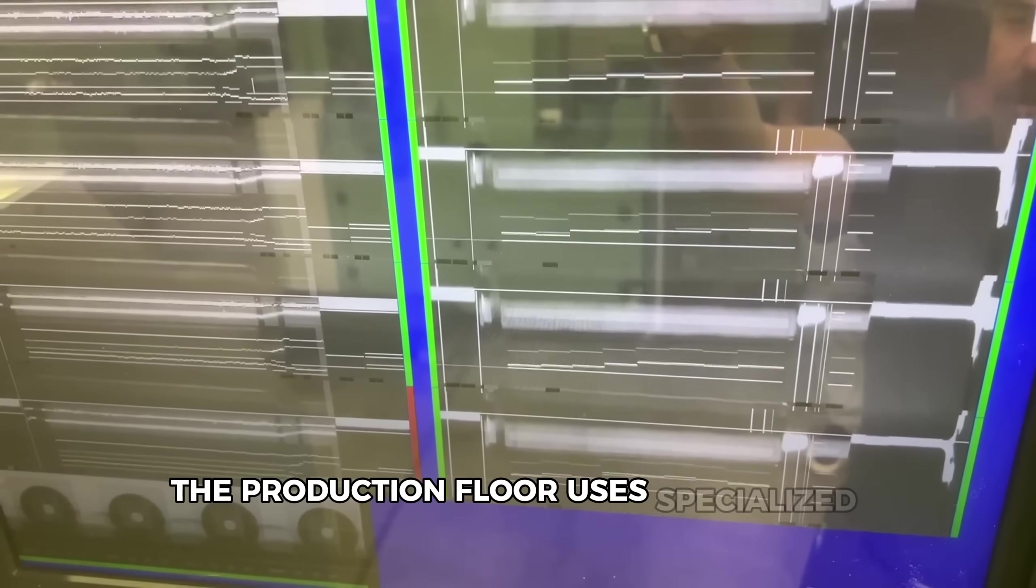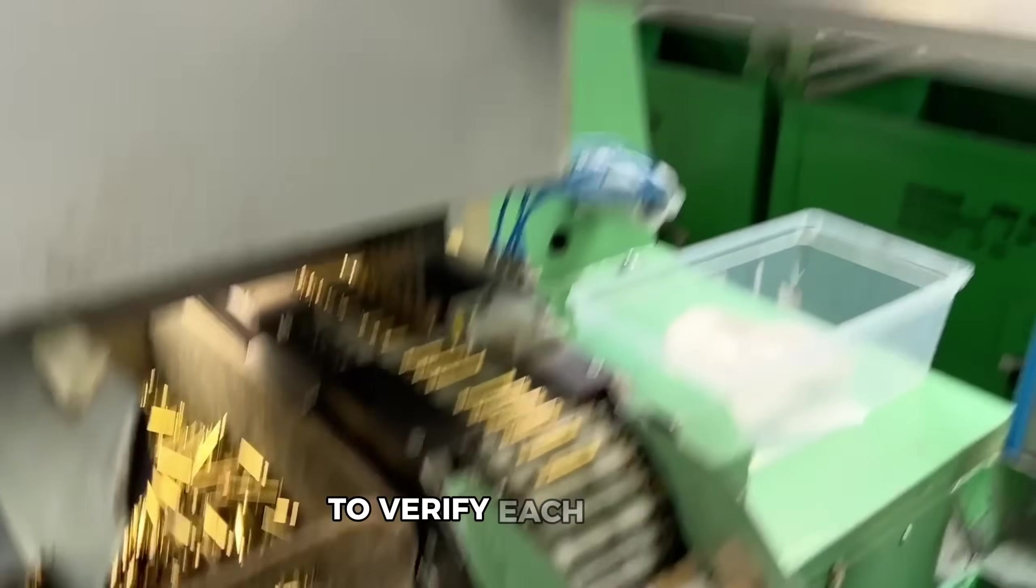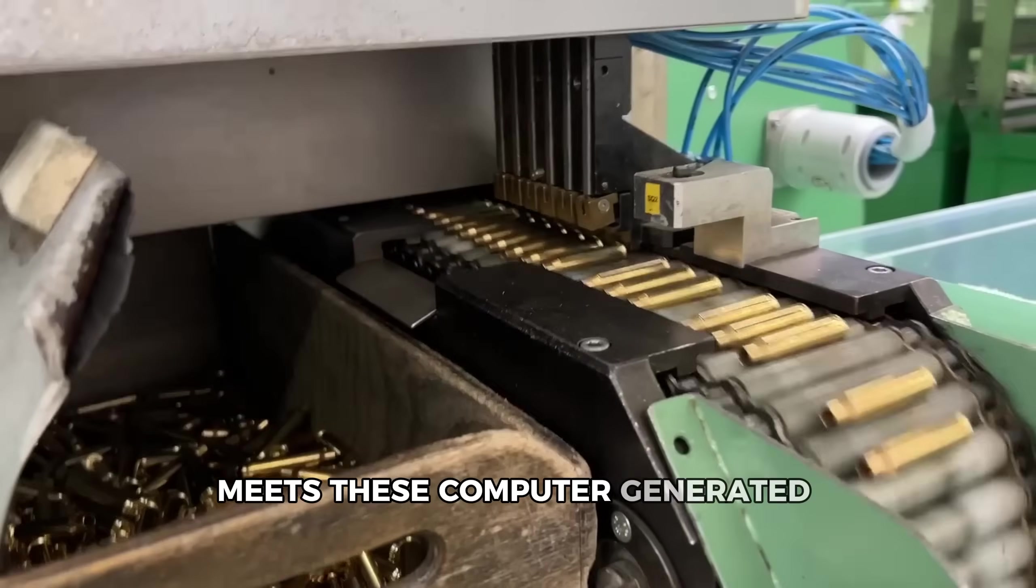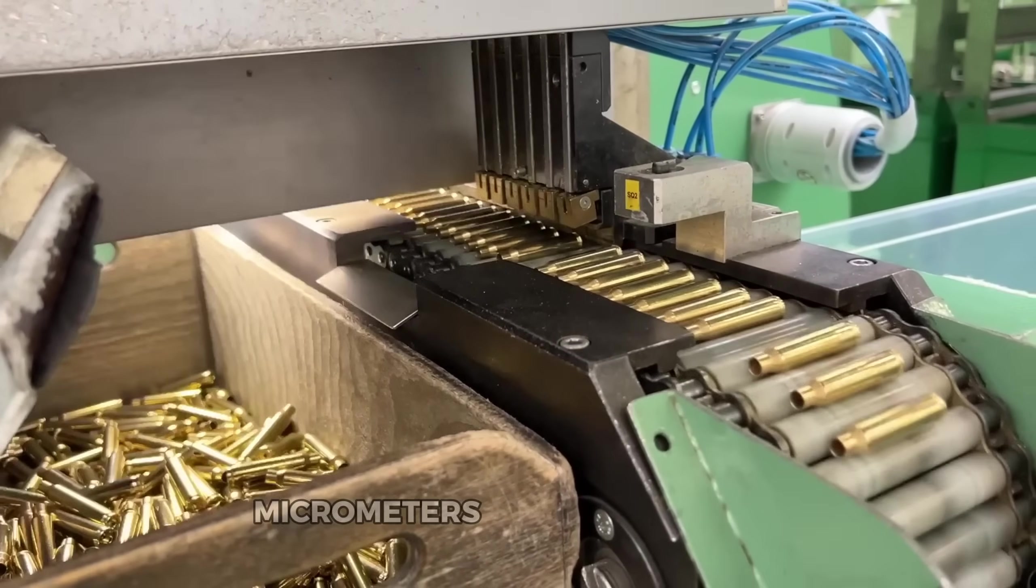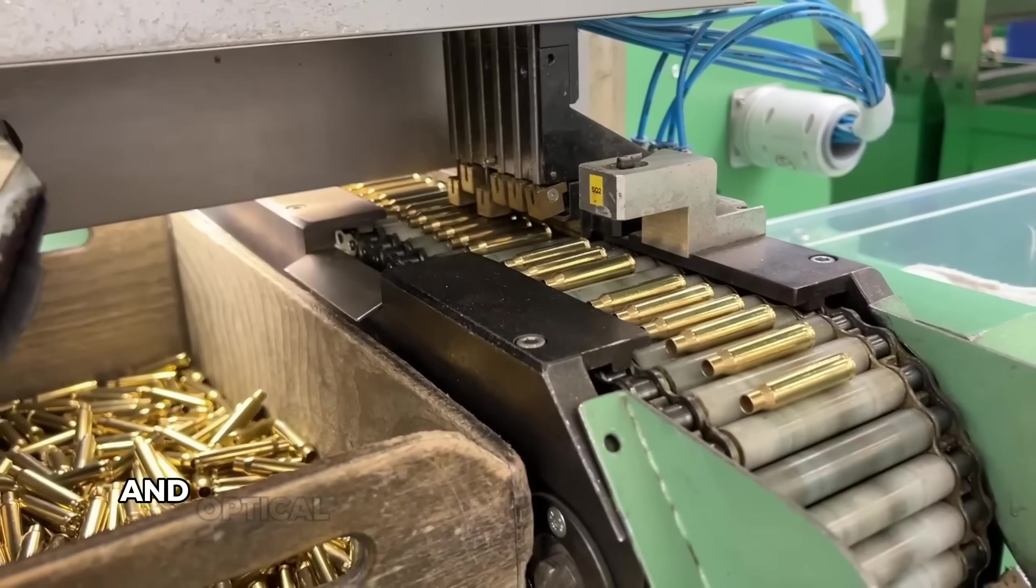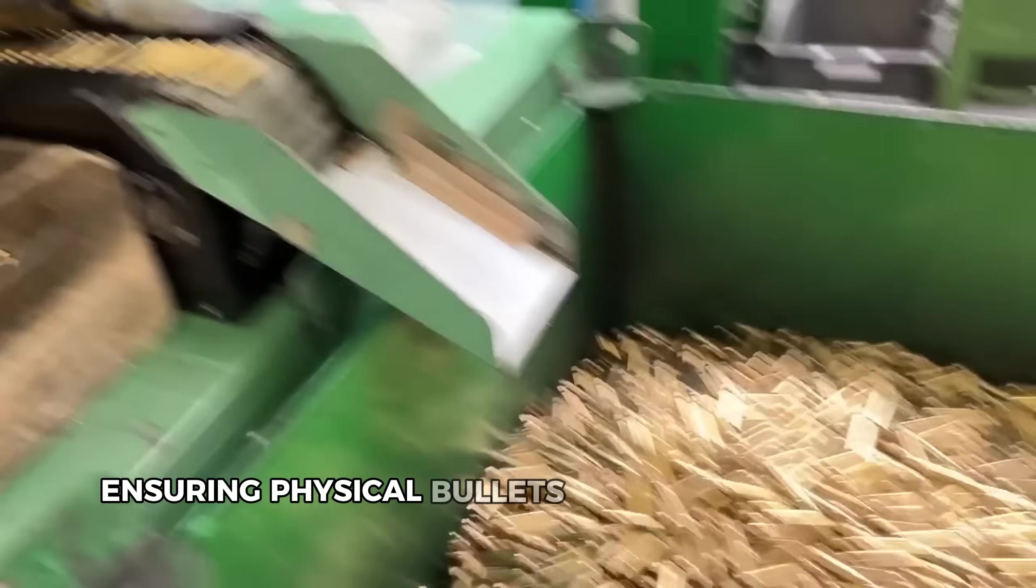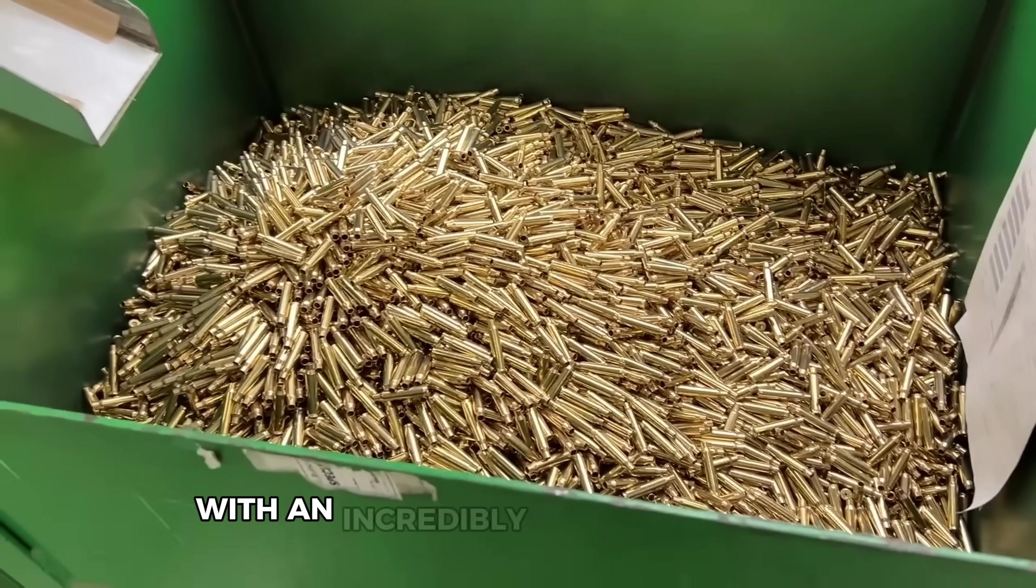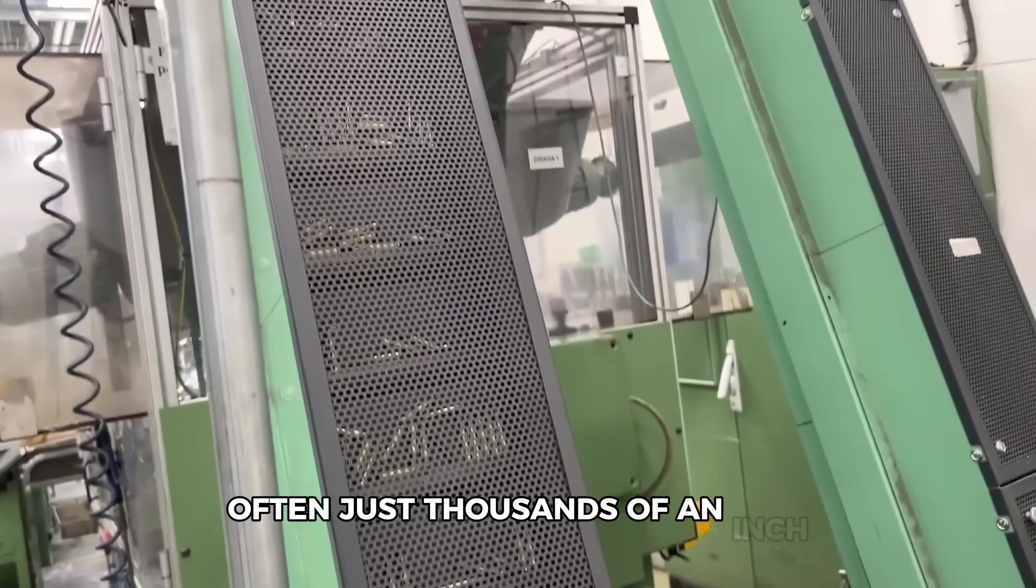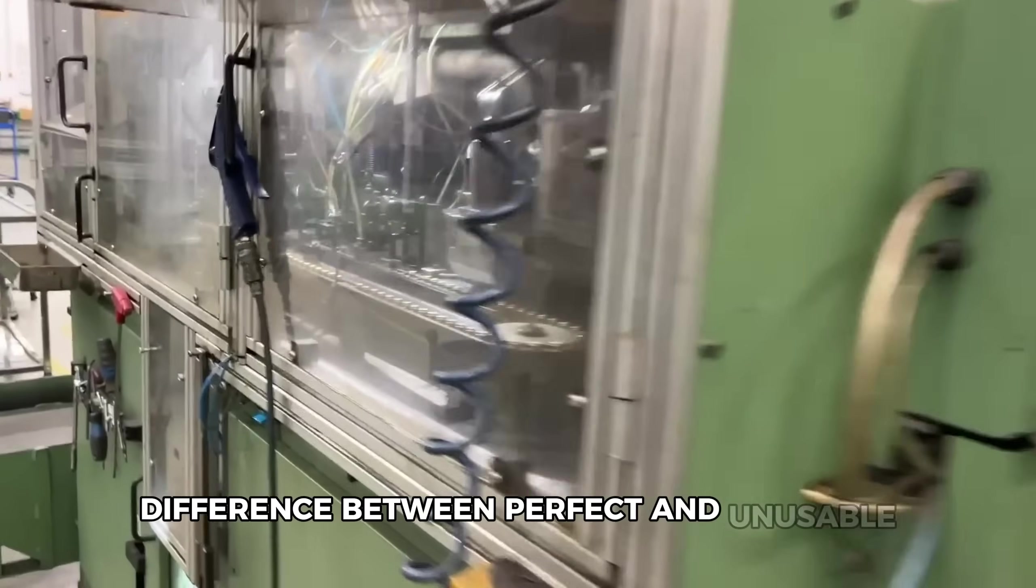The production floor uses specialized measurement tools to verify each bullet meets these computer-generated specifications. Micrometers, precision scales, and optical comparators constantly check dimensions, ensuring physical bullets match their virtual designs within incredibly tight tolerances, often just thousandths of an inch difference between perfect and unusable.